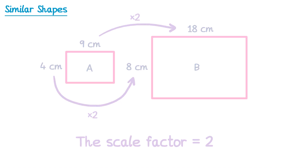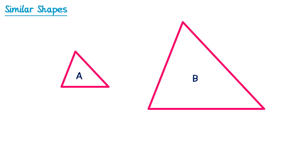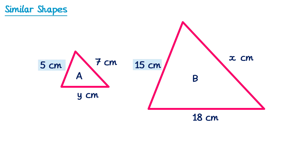Let's try a second example with triangle A and triangle B. We're given dimensions for shape A and shape B, and the question tells us these shapes are mathematically similar, meaning one must be an enlargement of the other. Looking at the sides: the 5 matches with the 15, on the bottom Y matches with 18, and on the right a 7 matches with X. The only pair where we have both values is the 5 and 15.